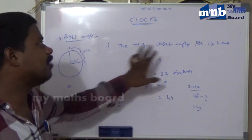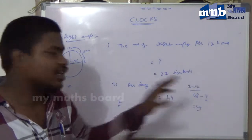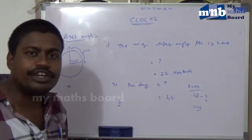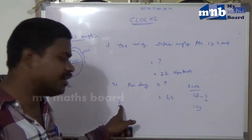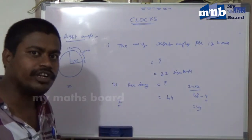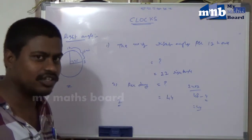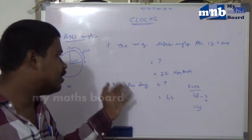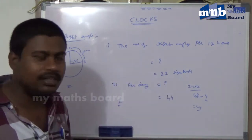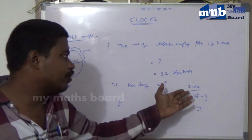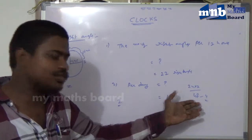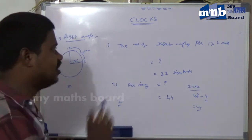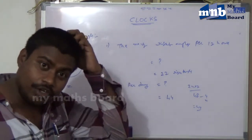Simply, the number of right angle positions per 12 hours is 22. Per hour two times, 12 hours gives 24, then subtract the two common right angles — three o'clock and nine o'clock — giving 24 minus 2 equals 22. Per day: 24 into 2 is 48, subtract four common right angle positions, giving 48 minus 4 equals 44. You can easily answer this type of question in computer-based exams.